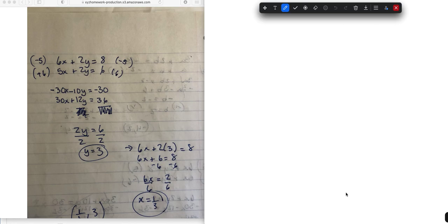So if we change that to 40, here's where we'll go. That would be negative 30x minus 10y equals negative 40, and 30x plus 12y equals 36. Then we get our 2y.